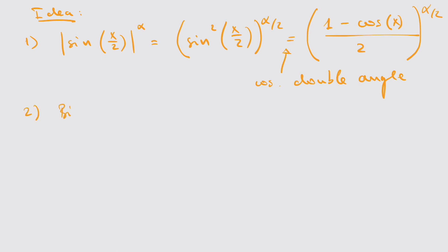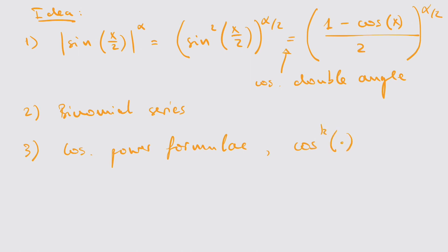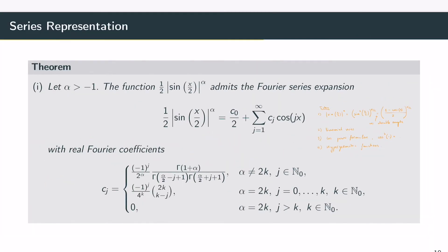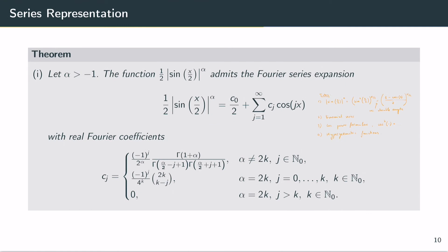You then apply the binomial series to the upper part of this fraction, and this binomial series will lead to powers of the cosine function. There are cosine power formulas which give you an explicit expression for cosine to the power k. After some rearrangements you can then apply formulas for so-called hypergeometric functions, which give you the explicit formula for our coefficients c.